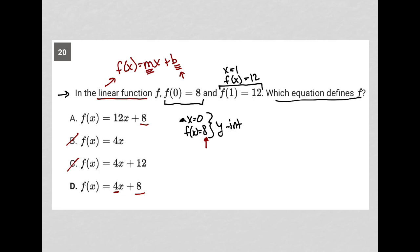Next, I'm choosing between D and A and determining which one of these is my slope. Is it 4 or is it 12? So how do you find a slope?